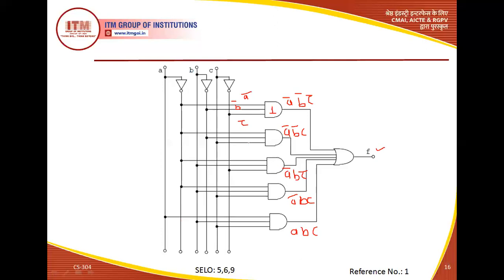In such a manner we can create any boolean function using logic gates. We will see more examples in the next video lecture with more practice of realizing boolean functions using basic logic gates, and also see how to realize boolean functions using NAND gate or NOR gate — that means universal logic gates.